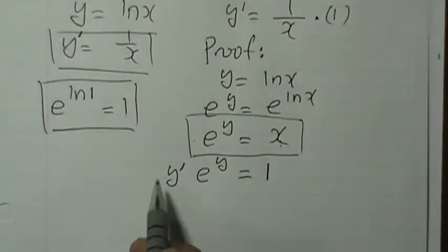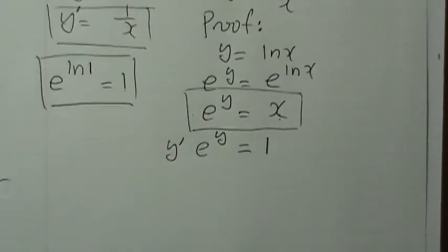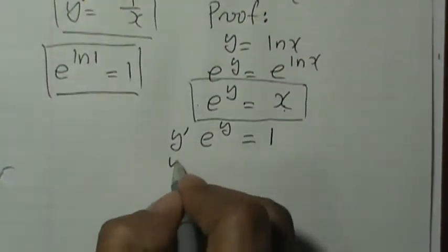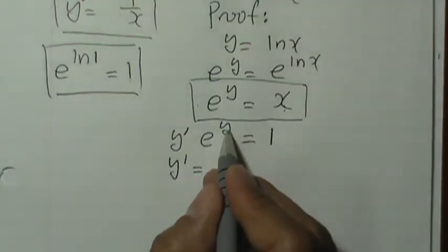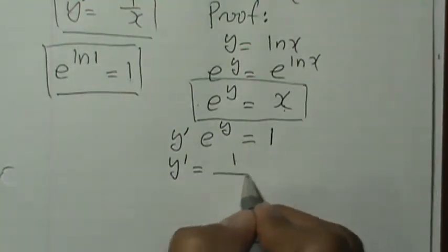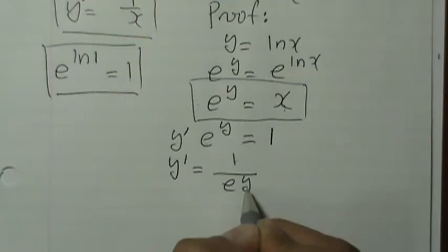I'm going to push this more up. To get y prime by itself, we divide both sides by e to the power of y. So we have 1 over e to the power of y.